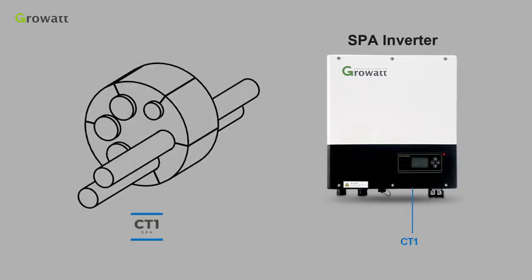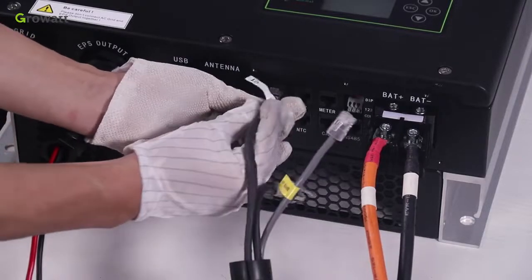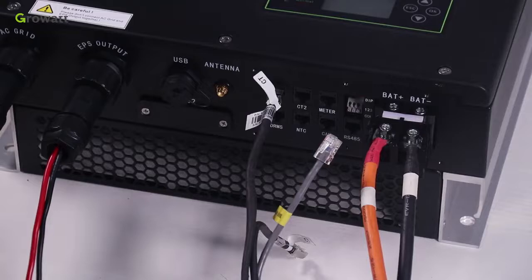Take CT1 for example. We need route the CT1 cable through an opening in the cable support sleeve. Thread the CT1 cable through the cable gland. Insert the RJ45 plug of the network cable into the CT1 pin connector on the inverter until it snaps into place.